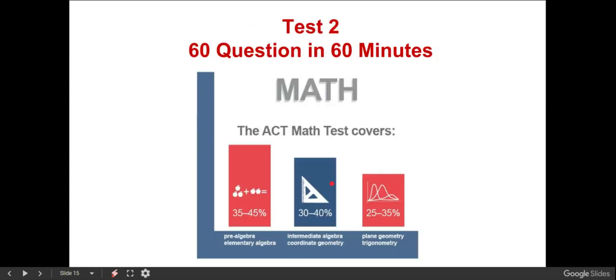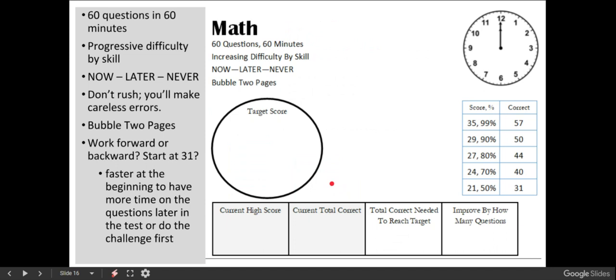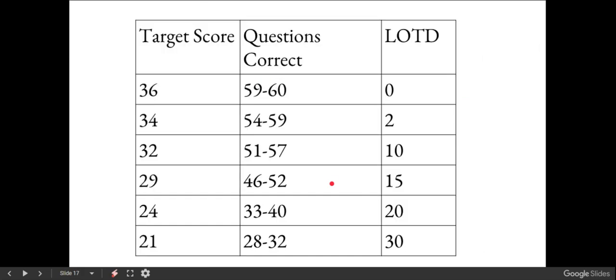Okay, so math, second test, 60 questions in 60 minutes. Prepping for math is different than test day strategy. So prepping, you need to cover your skills. On the strategy, you have to figure out what is your target score. So let's start with that. Your target score, if you're seeking to get a 36, you need to get 59 or 60 questions right. Some tests, you can get 59. Others, it has to be 60. But you're going to try all 60 questions. You're going to do your best to get them all right. If you're seeking a 34, 54 to 59 questions, again, depending on the test.